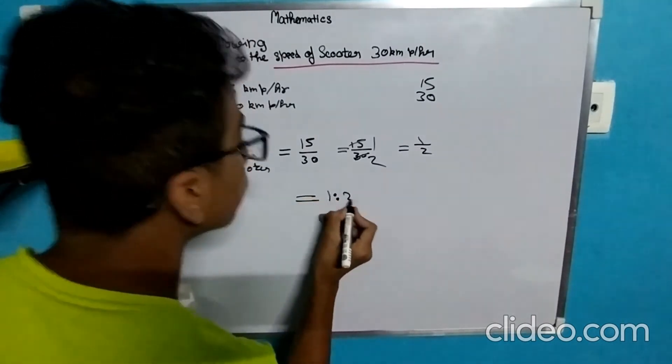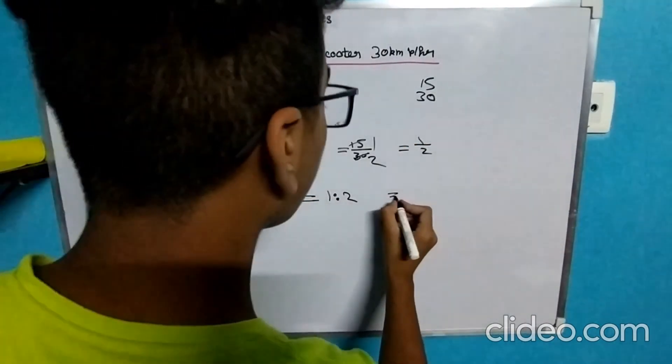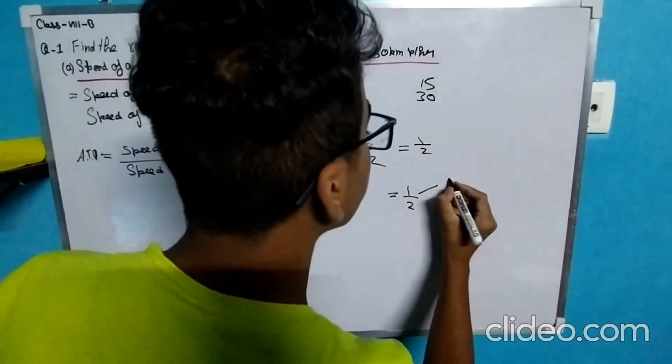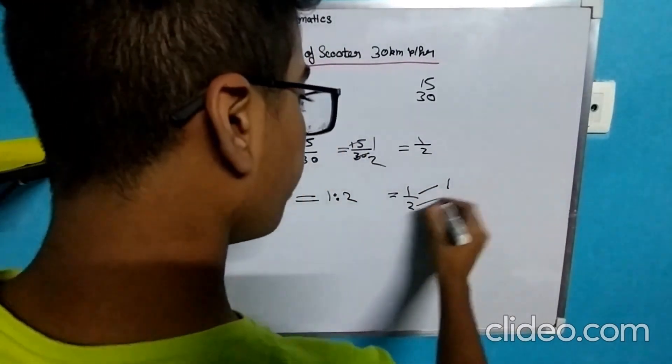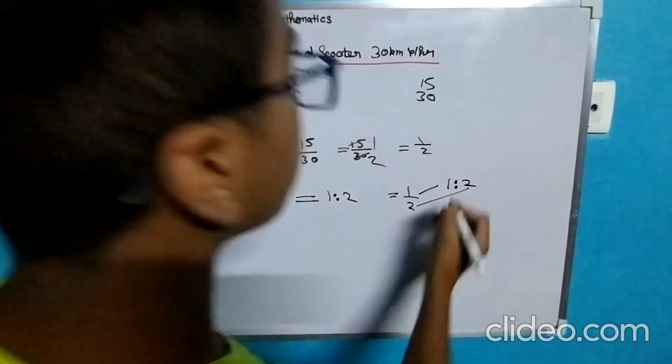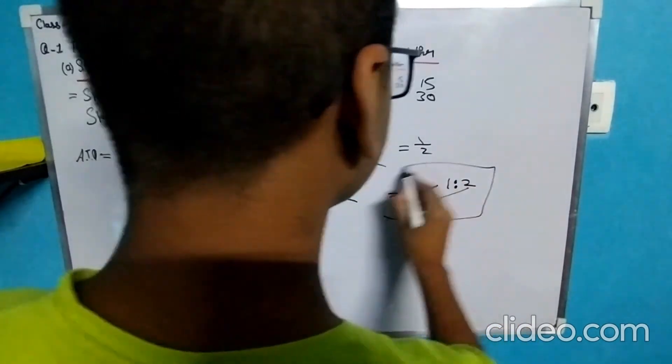1 ratio 2, because our fractional number is 1 upon 2. So we always put our numerator as the first number and denominator as the second number, and we put a ratio sign between them and we get the ratio.